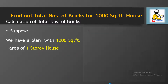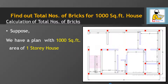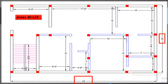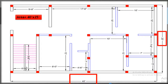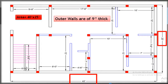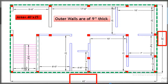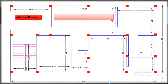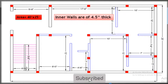Suppose we have a plan with 1000 square feet area of a single-storey house having the size of 40 feet by 25 feet — length of 25 feet and width of 40 feet. In this plan, the outer wall thickness is 9 inch, and beside the staircase the main drawing room wall is also 9 inch thick, shown in green dotted lines. Similarly, the inner walls have a thickness of 4.5 inch, also shown by green dotted lines.